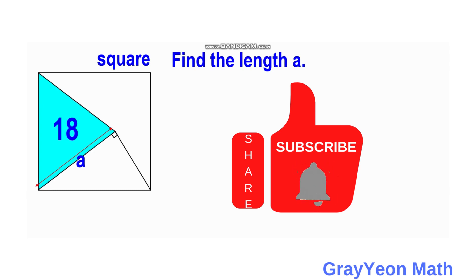Welcome to Grayon Math. We are asked to solve this problem. We have a square, and inside the square is a triangle with an area of 18 square units. Beside this, adjacent to this triangle, is another triangle which is a right triangle. We are required to find the length of the leg A.